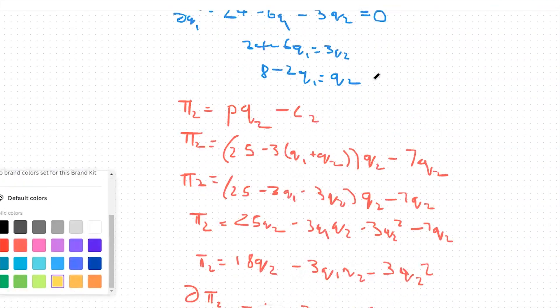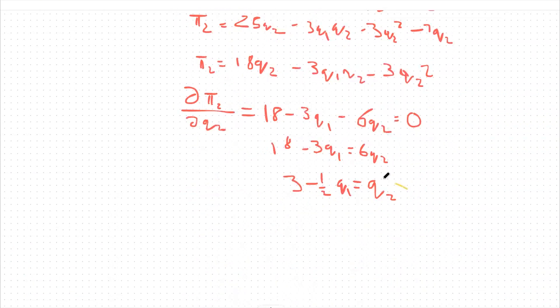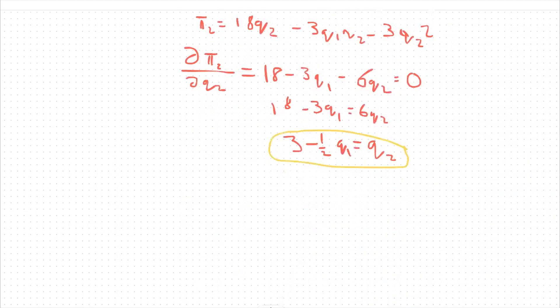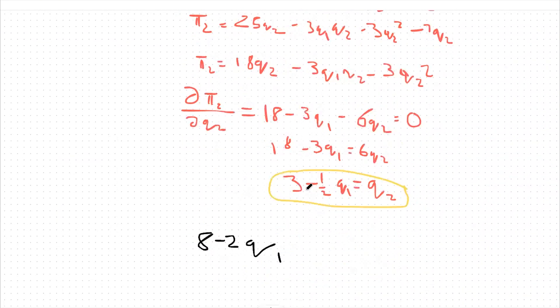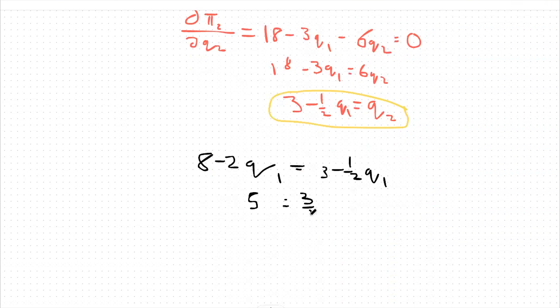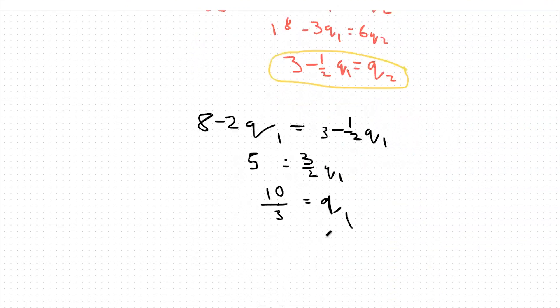So I'm going to take this profit function that we found up here and this profit function that we found down here rather, and I'm going to set them equal to each other. And what that's going to look like is going to be 8 minus 2q1, which is again what we solve for q2 over here, equals 3 minus 1.5q1. Then from there, I'm going to subtract 3 from both sides, add 2q1 to both sides. We get 3 over 2q1 is equal to 5. So that means 10 over 3 is equal to q1. So that's our quantity 1.